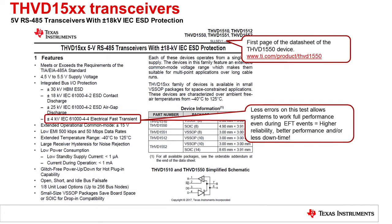This design highlights the performance of the new THVD-1550, enabling new possibilities of industrial communication. High EFT performance enables the system to work at full performance with less downtime due to EFT strikes. For more information on this RS-485 transceiver, please visit TI.com and search THVD-1550.